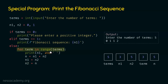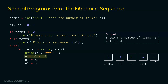In the fifth iteration, term equals four. n1 is three, so three is printed. n = n1 + n2: three plus five equals eight, so n equals eight. n1 becomes five and n2 becomes eight. We are done with the for loop after five iterations. On the screen we see: 0, 1, 1, 2, 3 — which is the correct Fibonacci sequence.